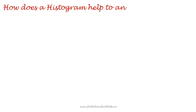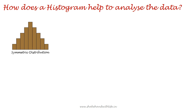How does a histogram help to analyze the data? When the number of vertical bars are equal on both sides of the tallest bar in descending order, making a normal curve like a bell shape, then this implies the data has symmetrical or normal distribution.